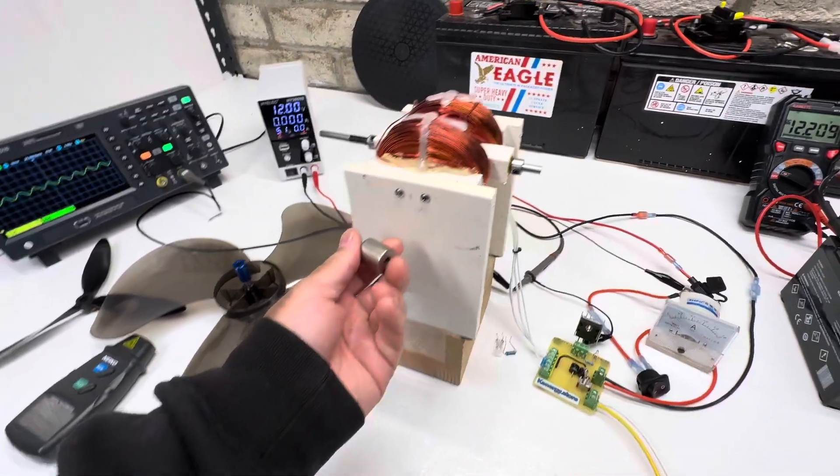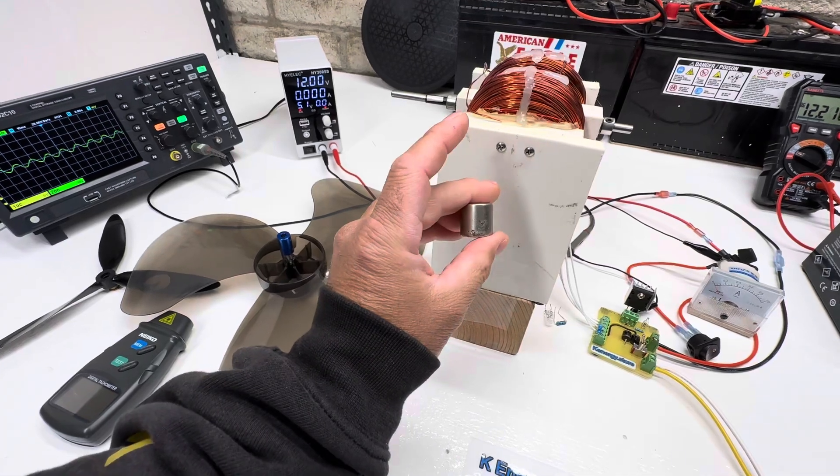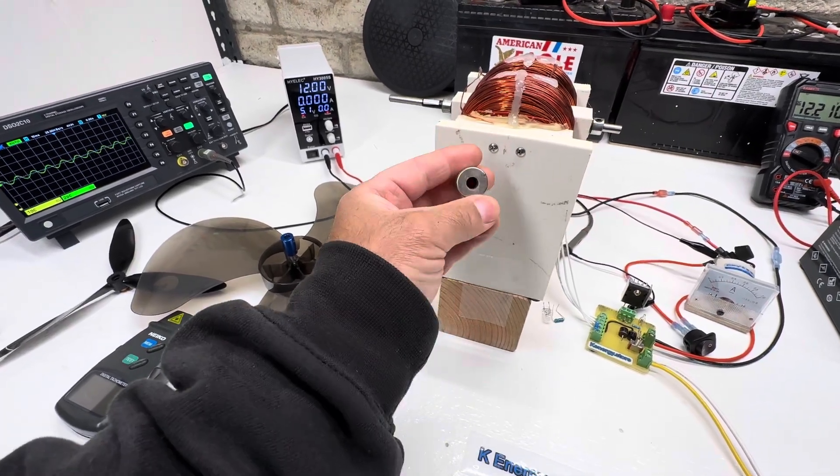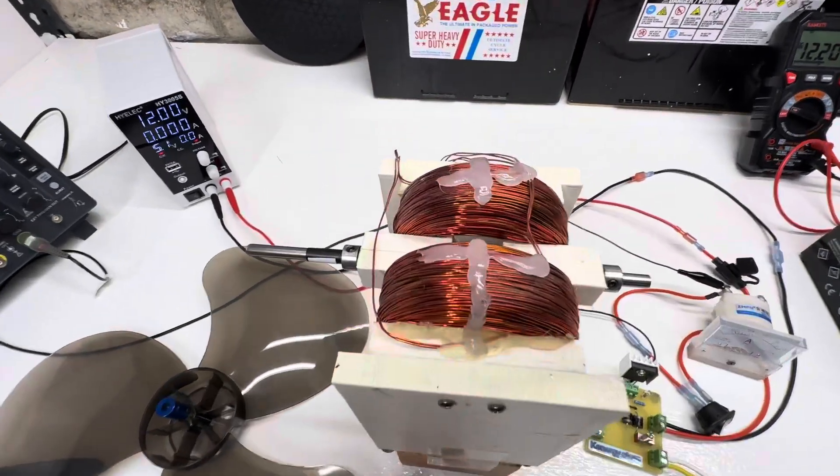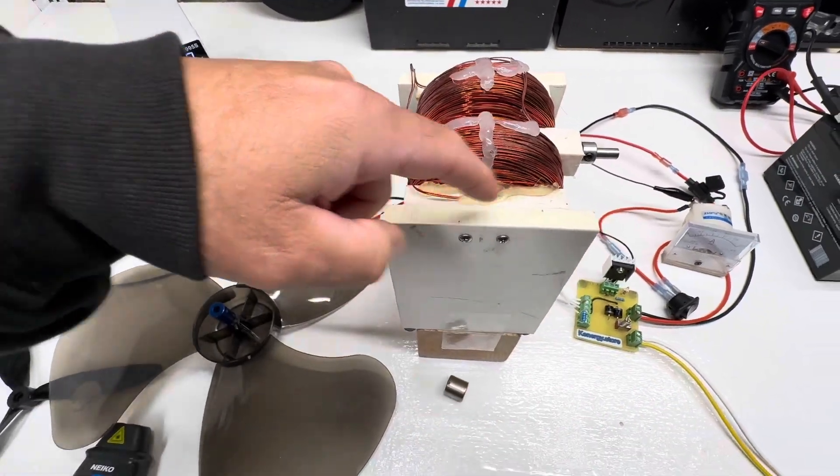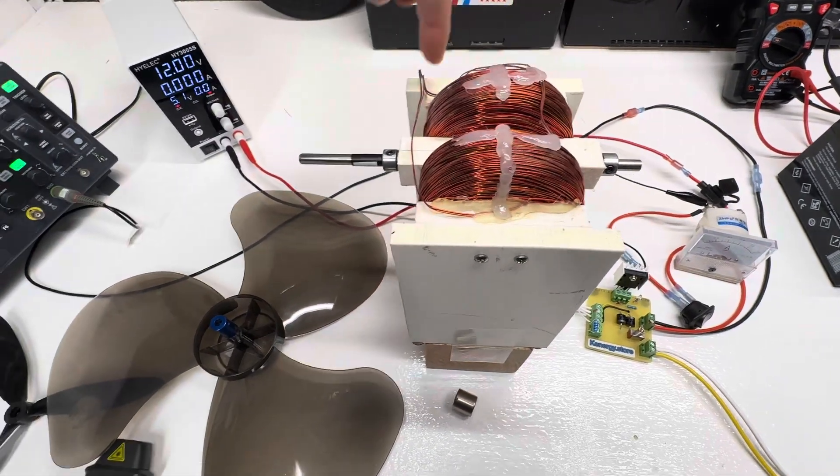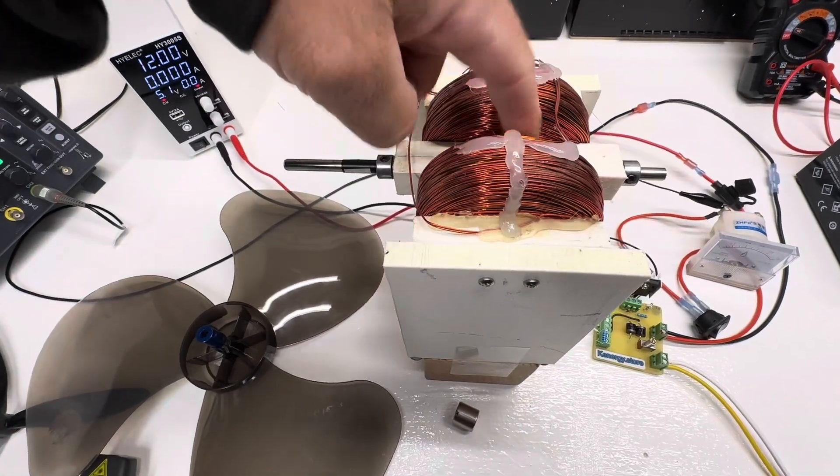Pretty simple construction. It just has this neo magnet three-quarter by three-quarter with a quarter inch shaft in it. Basically what I do is I cut this out of plastic, it's just a flat piece of three-quarter, drilled the center out and then I drilled all the way through.